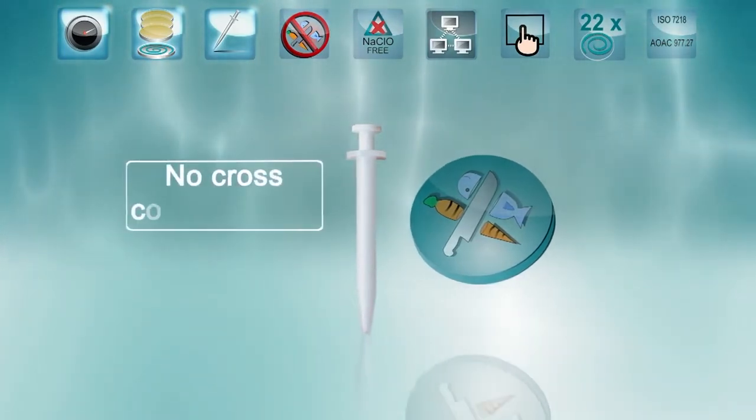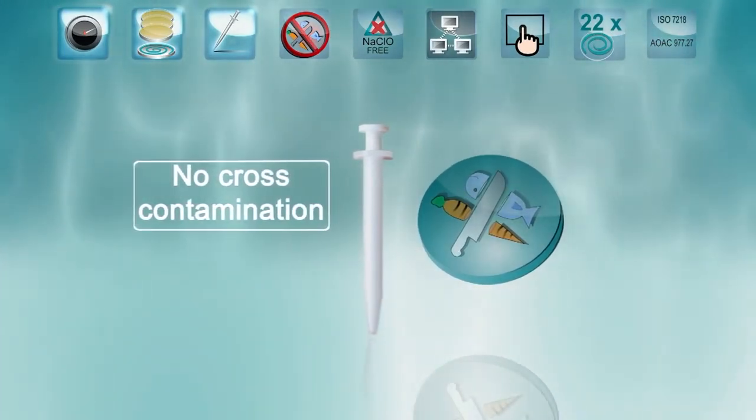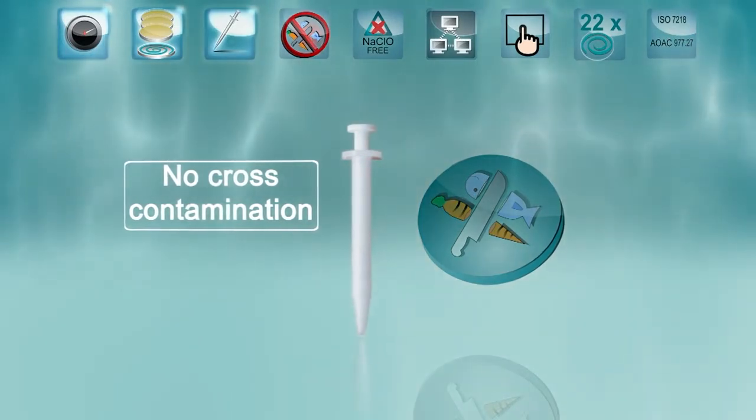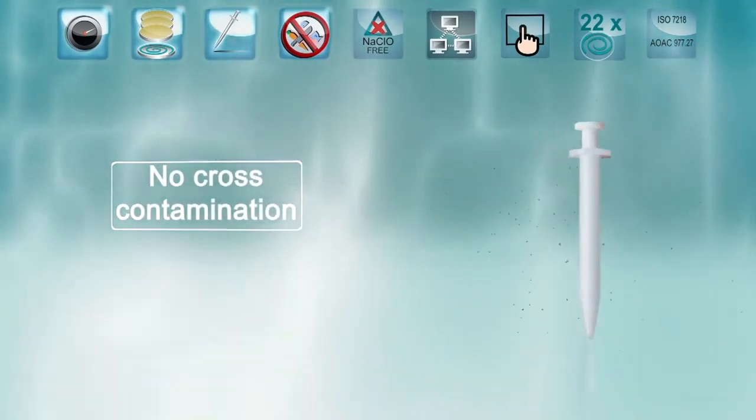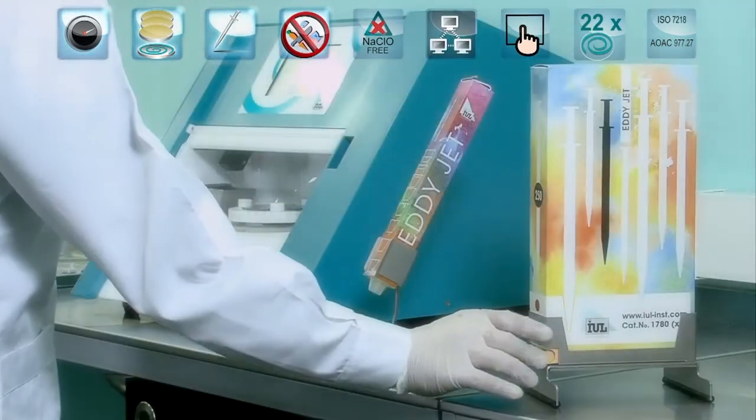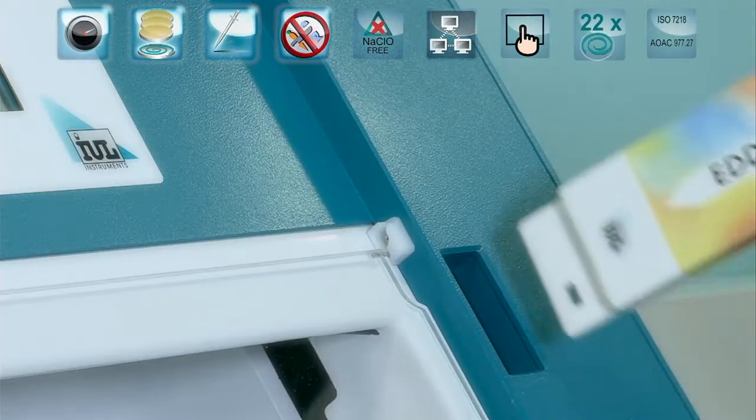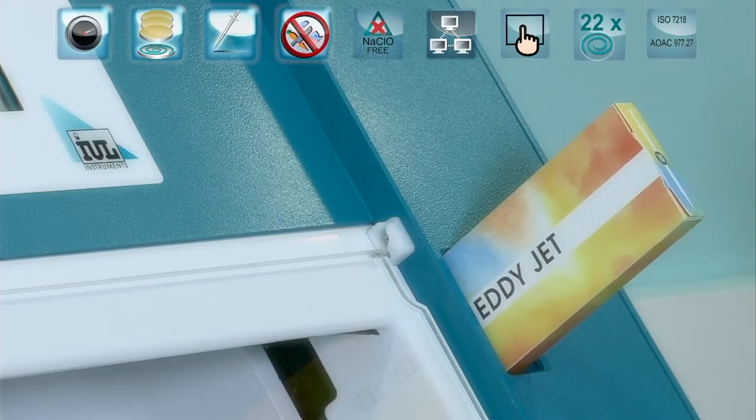IUL's world-patented micro syringes prevent any cross-contamination from taking place. This makes EDIJED2 the spiral spreader with the highest sensitivity. Also, gamma ray micro syringe sterilization makes cleaning cycles unnecessary, saving large amounts of time.